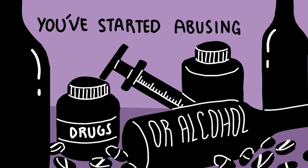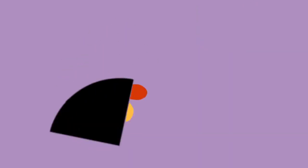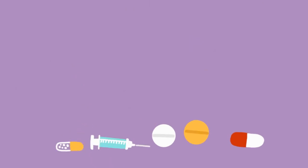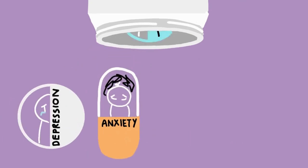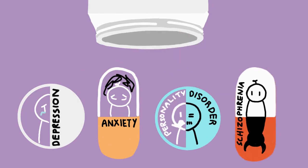Number eight: You've started abusing drugs or alcohol. According to mentalhealth.gov, one in four or 25% of people who live with the symptoms of a mental illness use alcohol or drugs to self-medicate things like anger, anxiety, or mania. Experts believe individuals who suffer from depression, anxiety disorders, personality disorders, or schizophrenia are more likely to use drugs and alcohol as a coping mechanism than people diagnosed with other mental illnesses.